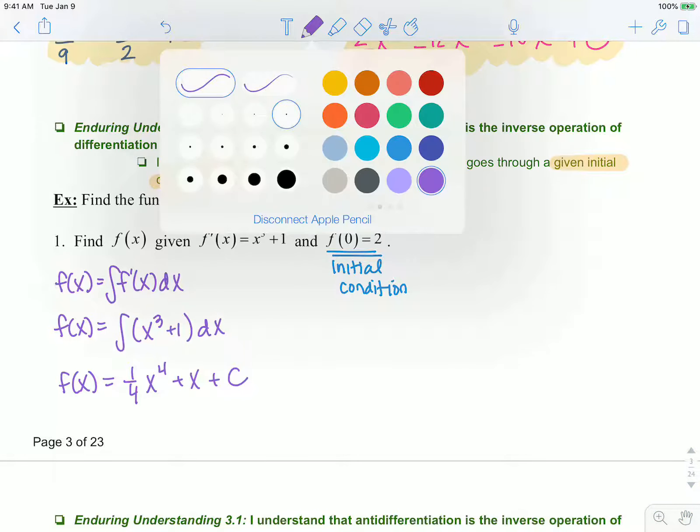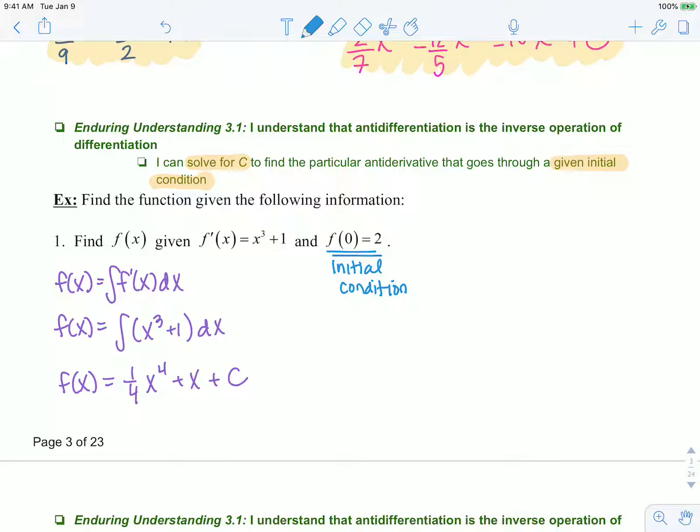Now we need to use this initial condition to solve for C. If f of 0 equals 2, that means x is 0 and y is 2. So f of 0 equals 2 means that this equals 1 fourth times 0 to the fourth plus 0 plus C. So that tells us that 2 is our C value.